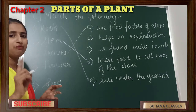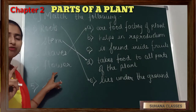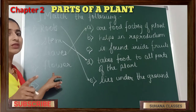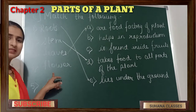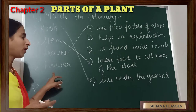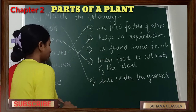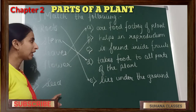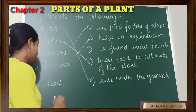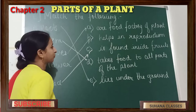Next one is flower. Flower is a part of the plant which helps in reproduction — from the flower we get a seed, and a seed can give birth to a new plant. So flower matches 'helps in reproduction.' The last one is seed, and seed is always found inside the fruit, so seed matches that option.